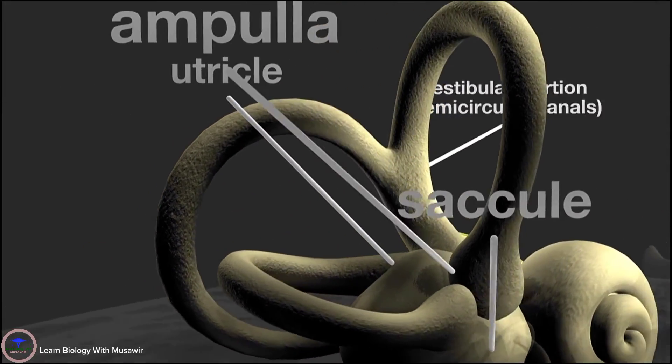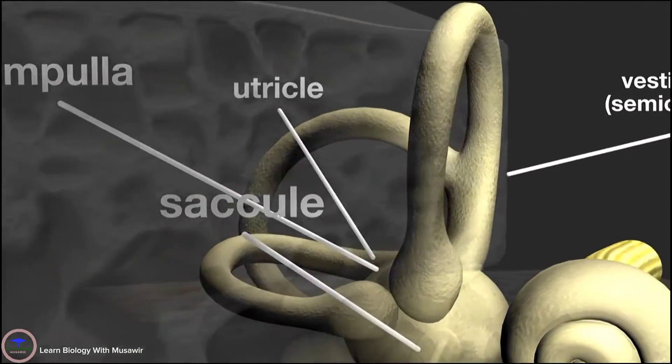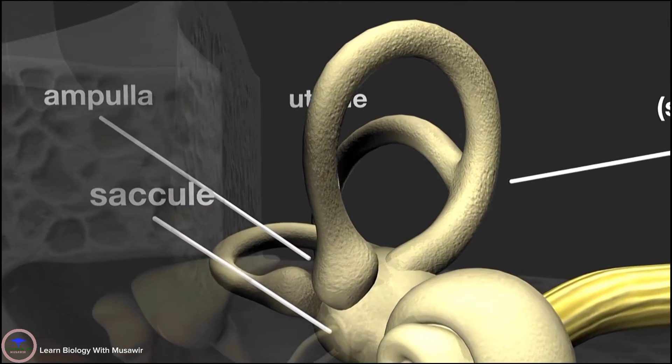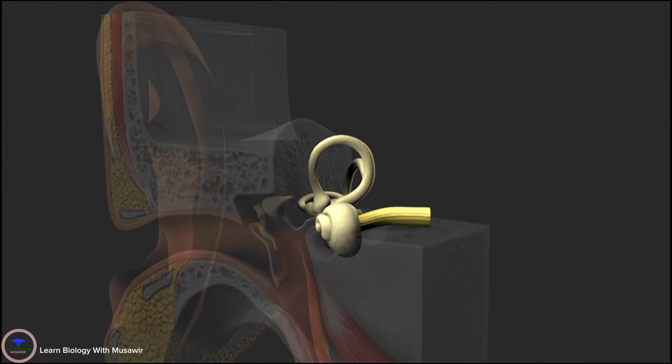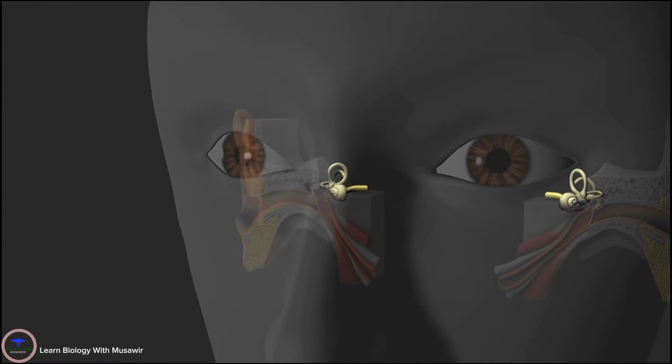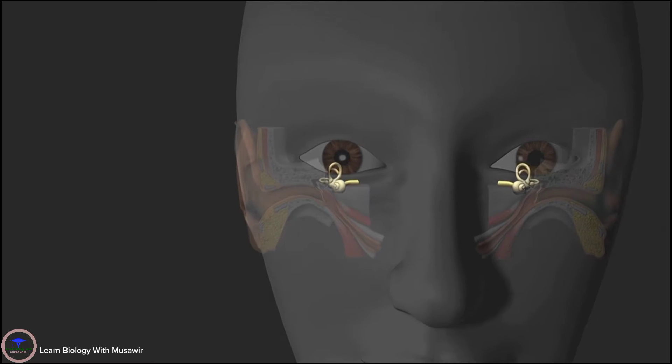These contain fluid and sensory cells which move in response to head movements and travel to indicate the body's status. The vestibular system works in conjunction with the eyes and the receptor cells in the joints of the body to continuously maintain our balance.